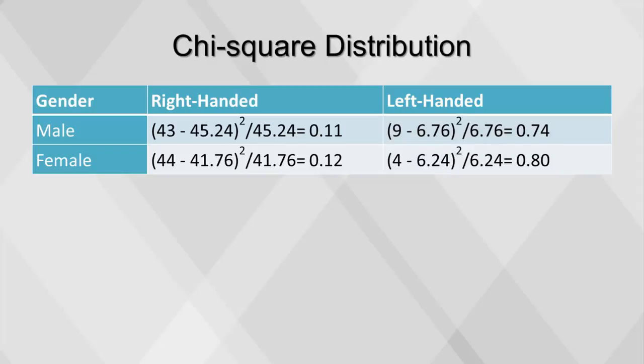Summing those values results in a chi-square test statistic of 1.78. Using this value in a chi-square distribution, along with the degrees of freedom based on the number of values for each variable, and a significance level such as 0.05, is how the p-value is obtained.